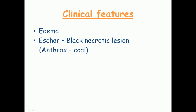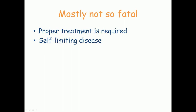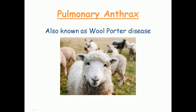The clinical features are mainly edema, which can be either localized to the site of entry or throughout the body in some cases. The characteristic feature of cutaneous anthrax is a black necrotic lesion known as an eschar. The word 'anthrax' basically means coal, because the color of the lesion is coal black. That is why anthrax is named so. Mostly, cutaneous anthrax is not fatal if properly treated and is usually a self-limiting disease with adequate treatment.